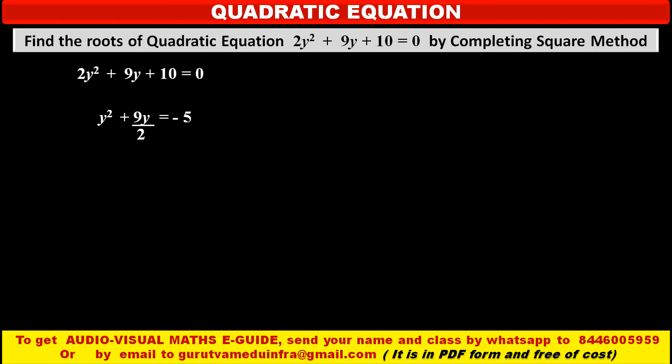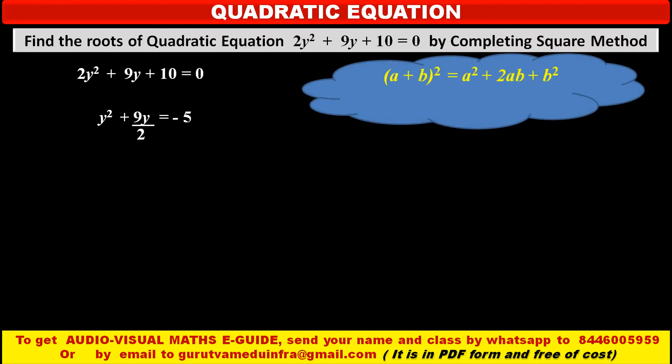Now in the left hand side we want a complete square, so we apply the identity: (a + b)² = a² + 2ab + b². That means to get a complete square, we want a proper expansion of the form a² + 2ab + b² on our left hand side.